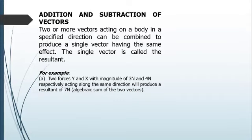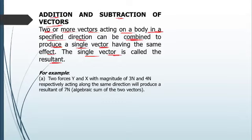Vectors can be added and subtracted just like scalars, but with one unique consideration: their direction. Because of the direction in which they act, we don't just add them algebraically without care — we must take direction into consideration. Two or more vectors acting on a body in a specified direction can be combined to produce a single vector with the same effect; that single vector is called the resultant.